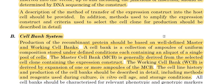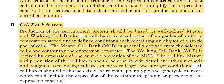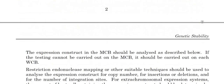Now let's discuss the cell bank system. Production of recombinant DNA protein should be based on well-defined master and working cell banks. A cell bank is a collection of ampoules of uniform composition stored under defined conditions, containing an aliquot of a single pool of cells. The master cell bank is generally derived from the selected cell clone containing the expression construct. The working cell bank is derived by expansion of one or more ampoules of the master cell bank. The cell line history and production of cell banks should be described in detail, including methods and reagents used during culture, in vitro cell age, and storage conditions.